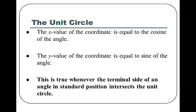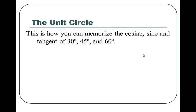If you have the intersection point between the terminal side of the angle and the unit circle, that coordinate is cosine comma sine. The x value equals the cosine of the angle; the y value equals the sine of the angle. This is true whenever the terminal side of an angle in standard position intersects the unit circle. All of our angles are in standard position. This is how we're going to memorize cosine, sine, and tangent of 30, 45, and 60 degrees.